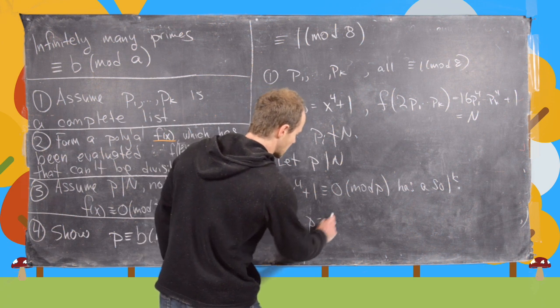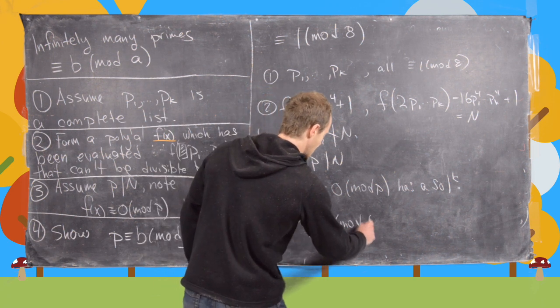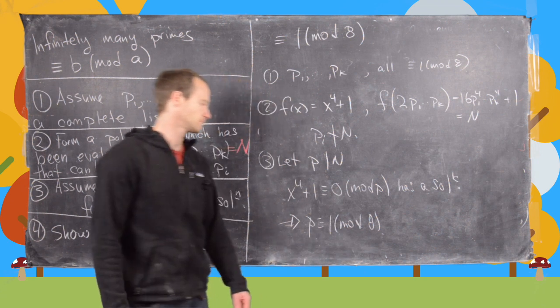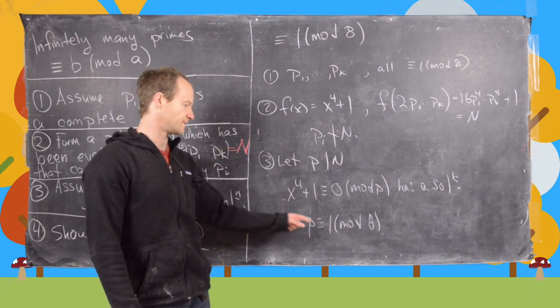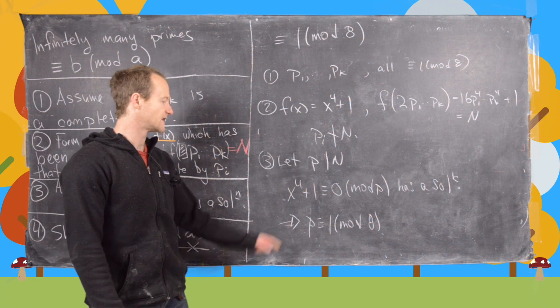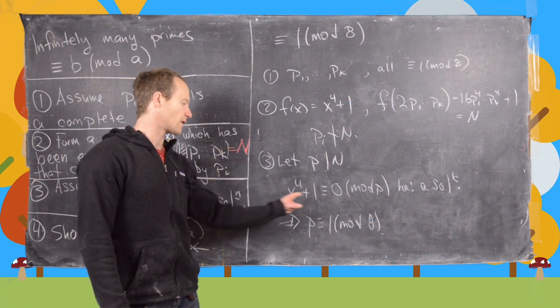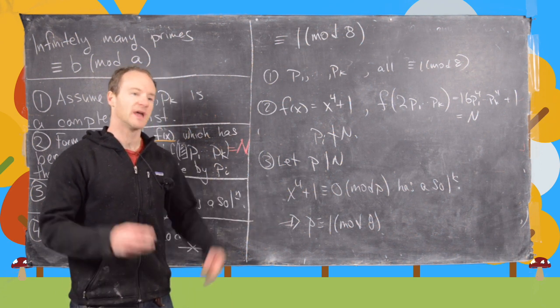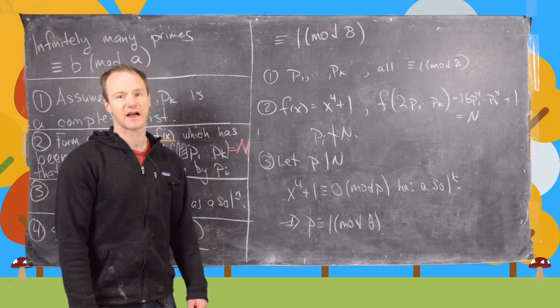But then after a little bit more work you can see that this implies that p is congruent to 1 mod 8. So in other words only primes of the form 1 mod 8 produce some sort of fourth root of negative 1. Again you'd have to check that carefully but that's true.